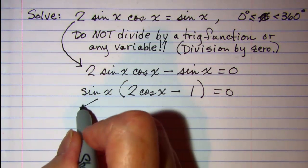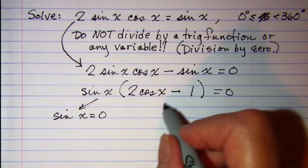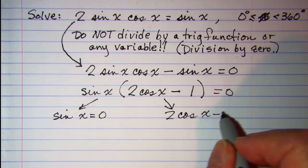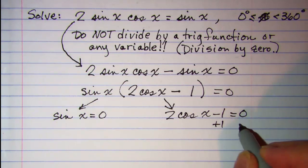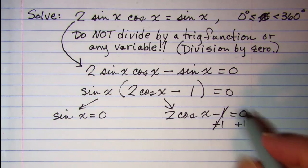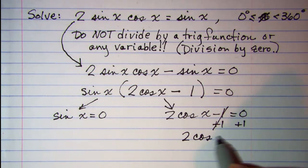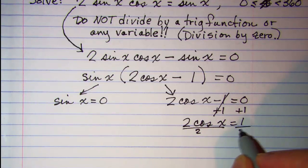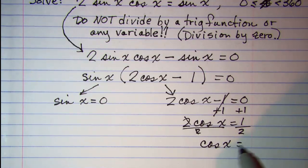Now we have 2 factors multiplied together equaling 0. We can set each factor equal to 0. Sine x equals 0 and 2 cos x minus 1 equals 0. I can add 1 to both sides here, so 2 cos x equals 1, and divide by 2, so cos x equals 1 half.